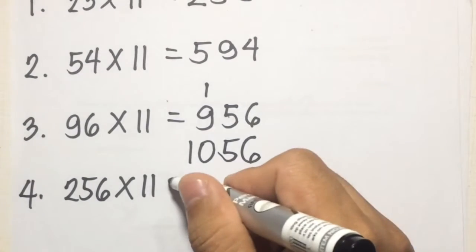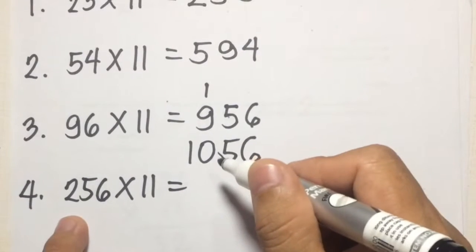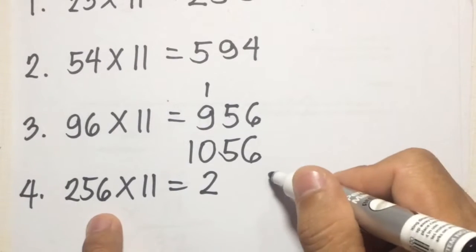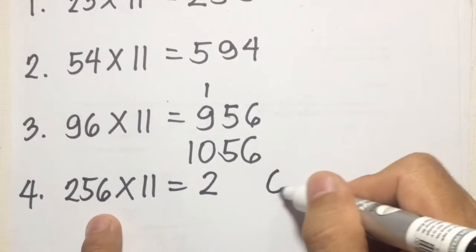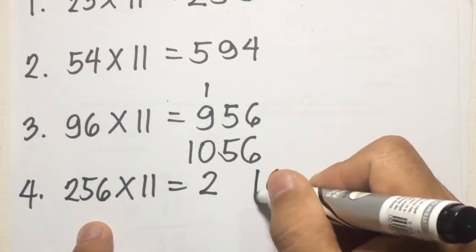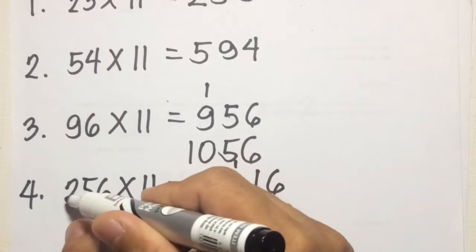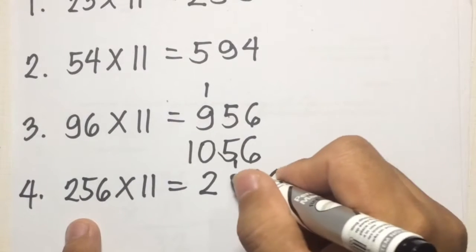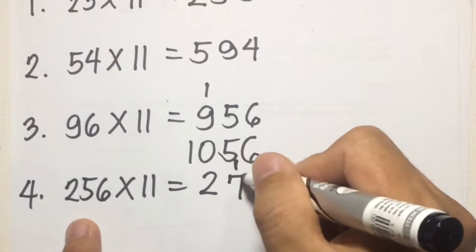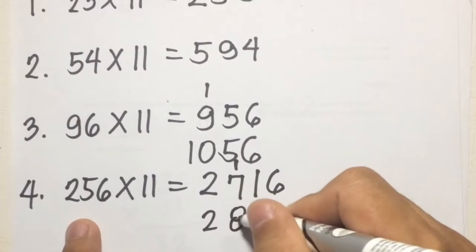Number 4: 256 times 11. The first digit is 2 and the last digit is 6. Adding the last two digits: 5 plus 6 is 11, so we carry 1. Then adding the next two digits: 2 plus 5 is 7, plus the carried 1 is 8. So our answer is 2816.